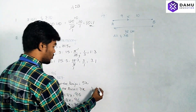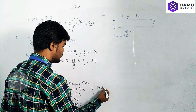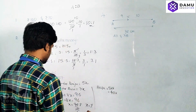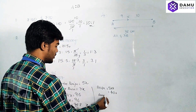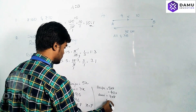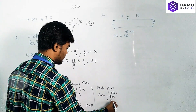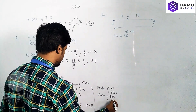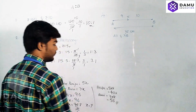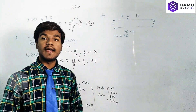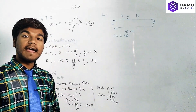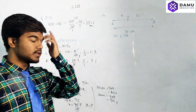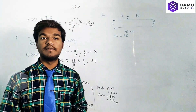So chocolates for Raju equal 5 into 8, that is 40 chocolates. Chocolates for Ravi equal 7 into 8, that is 56 chocolates. So Raju has 40 chocolates and Ravi has 56 chocolates. If you take this ratio — 40 is to 56 — you will get 5 is to 7, like that we have to solve.